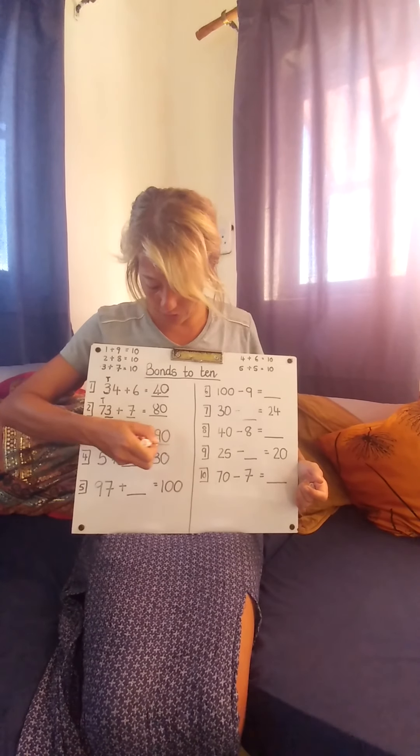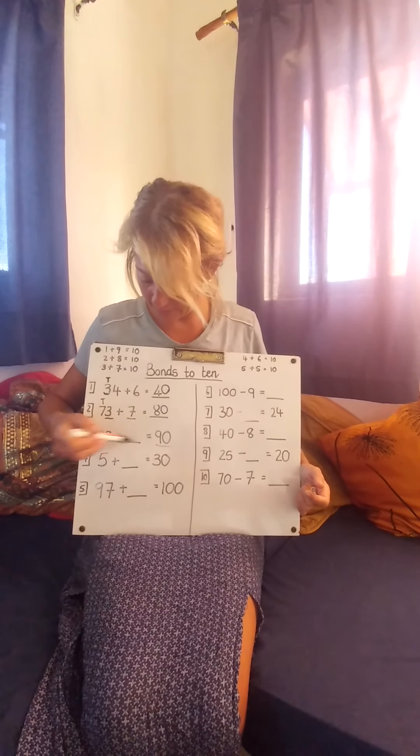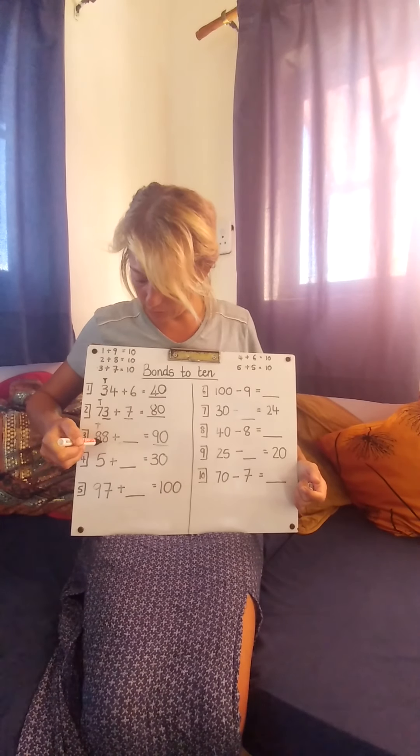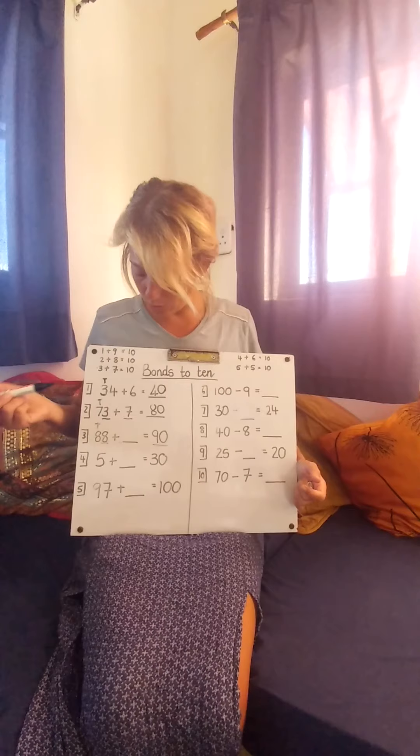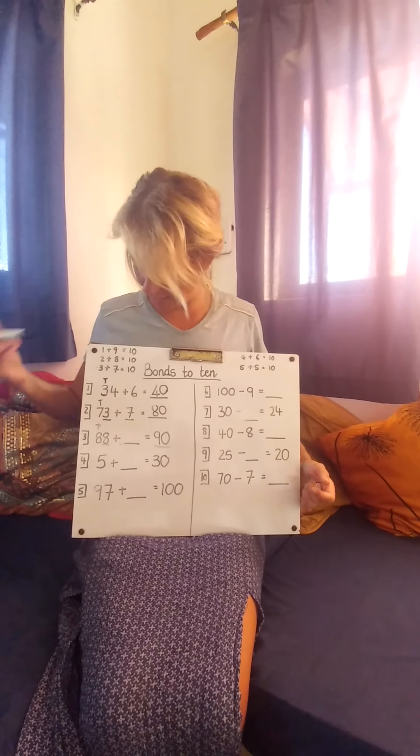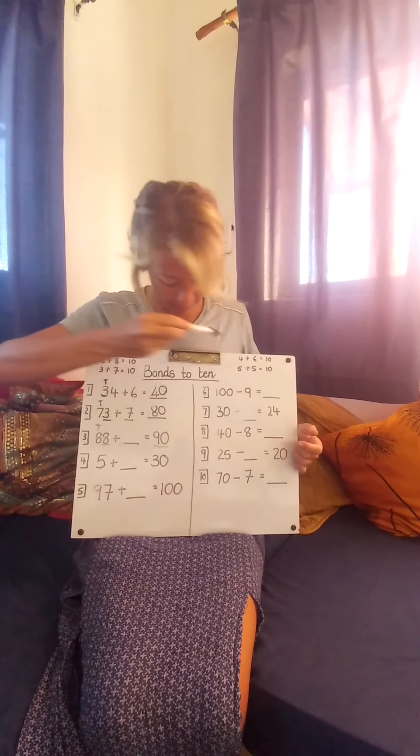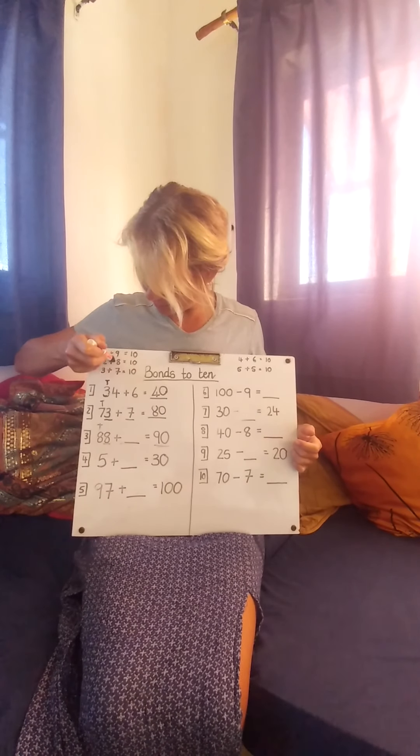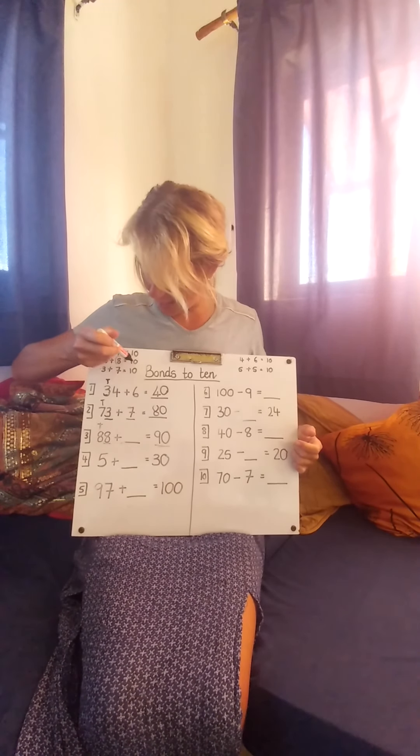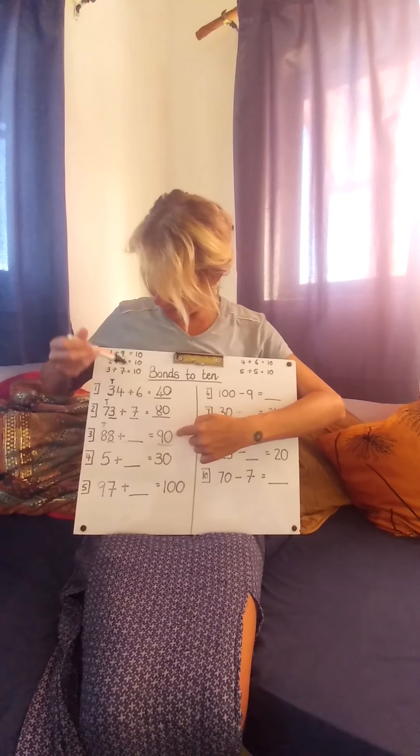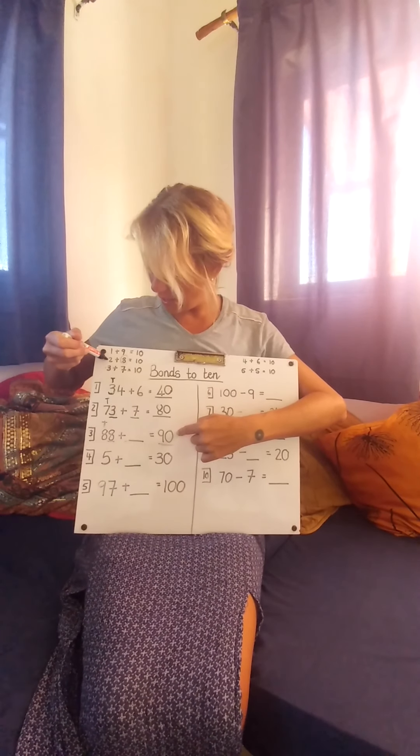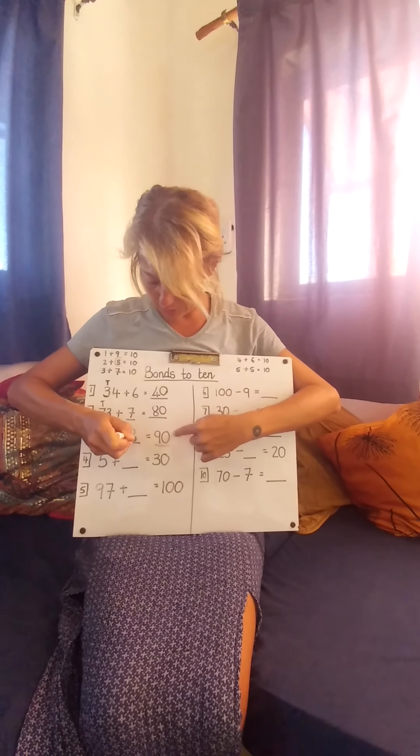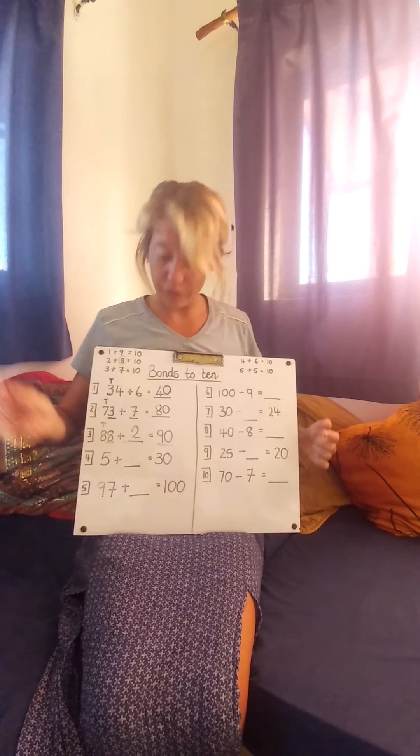Here we're ending on a 10. It's the next 10 after 80. So if this is an 8, what plus an 8 makes a 10? Let's find our 8 up here. Ah, here's our 8. An 8, we've got a 10, a 90, 10, 2. So now we know that this one must be 2. I want you to finish those.